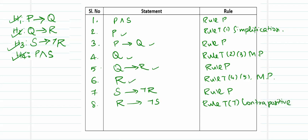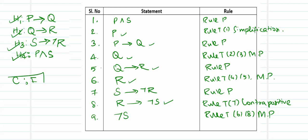Step 8: take the contrapositive of 'if s then negation r'. Flipping it, negation of negation r gives r, so we get 'if r then negation s' — rule T of step 7, contrapositive. Step 9: from r (step 6) and if r then negation s (step 8), by modus ponens we get negation s — rule T of steps 6 and 8.